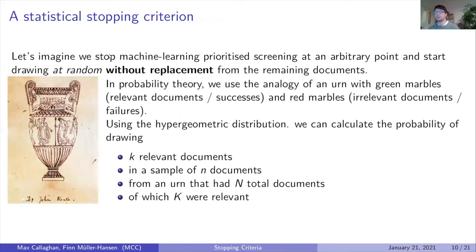We imagine that we stop machine learning prioritized screening at some point and start drawing at random without replacement from the remaining documents. In probability theory, we use the analogy of an urn with green marbles (relevant documents or successes) and red marbles (irrelevant documents or failures). Using the hypergeometric distribution, we can calculate the probability of drawing k relevant documents in a sample of n documents from an urn that had N total documents of which K were relevant.